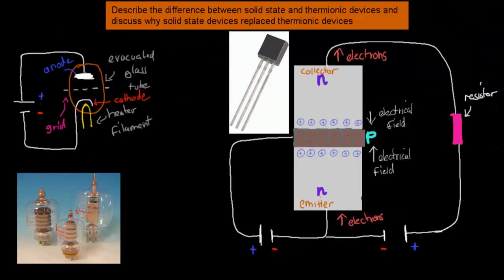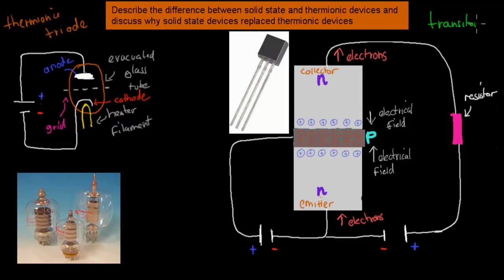The other comparison is your thermionic triode versus your transistor. Your transistor is the equivalent of your thermionic triode in terms of its function. So we basically have the same build-up: an evacuated glass tube, an anode positive electrode, a cathode negative electrode, and a heater filament which will eject electrons because of heat. These electrons will move towards the anode and complete the circuit. The only difference is we also have a grid, shown by these dashed lines.